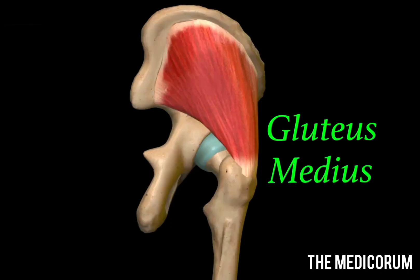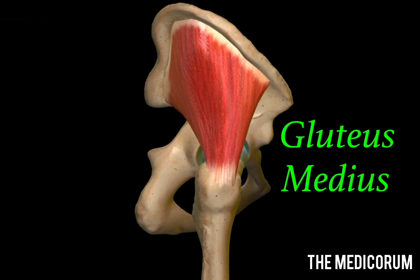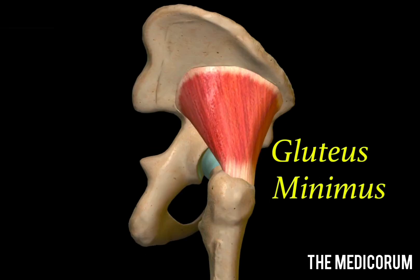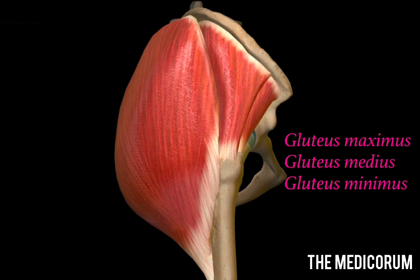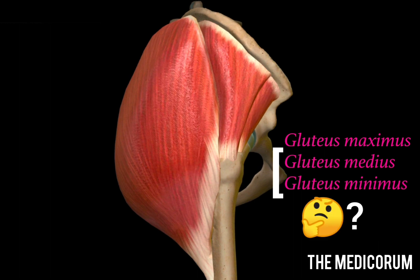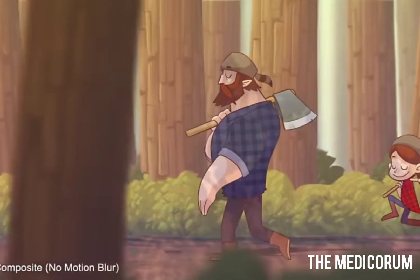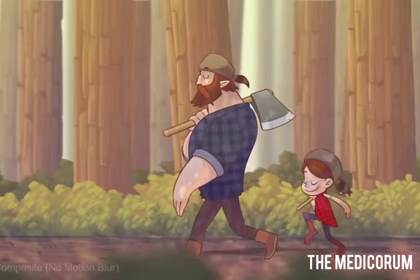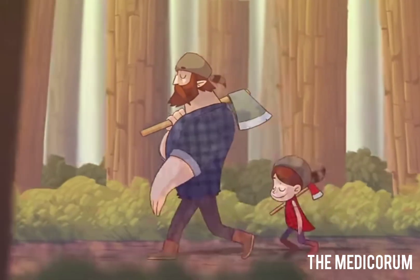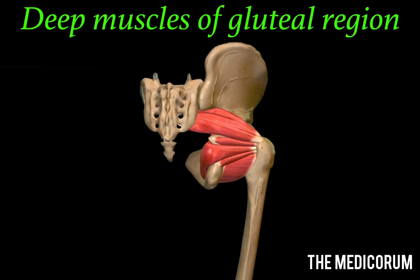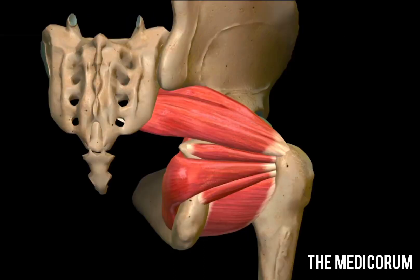The second muscle is the gluteus medius — a fan-shaped muscle covering the lateral surface of the hip as well as pelvis. After removing gluteus medius we find another fan-shaped muscle, the gluteus minimus, which is covered by gluteus medius. The actions of gluteus medius and gluteus minimus are that they are the chief abductors of the thigh. Along with this, the gluteus medius and minimus help maintain the balance of the body when the opposite foot is off the ground.